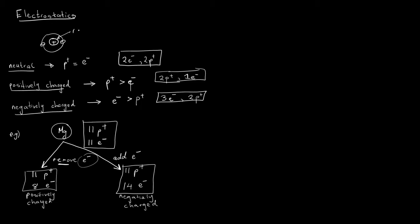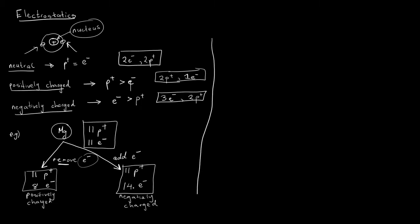The protons are firmly held in the nucleus. In the diagram, this is the nucleus. The protons do not move, but the electrons around the nucleus are easily moved or accelerated. So we added electrons to get a negatively charged atom and removed electrons to get a positively charged atom. There is no scenario where we remove or add protons — it's all about the movement of electrons.